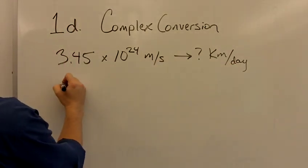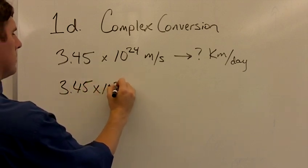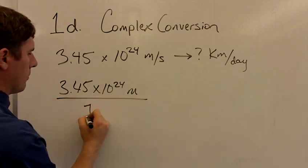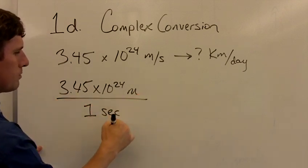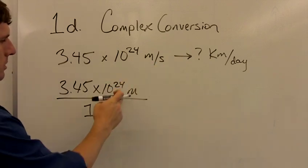Alright, so we're going to leave it in scientific notation for now: 3.45 times 10 to the 24th meters over one second. Meters per second - if you do it differently you get it wrong. Meters over seconds.